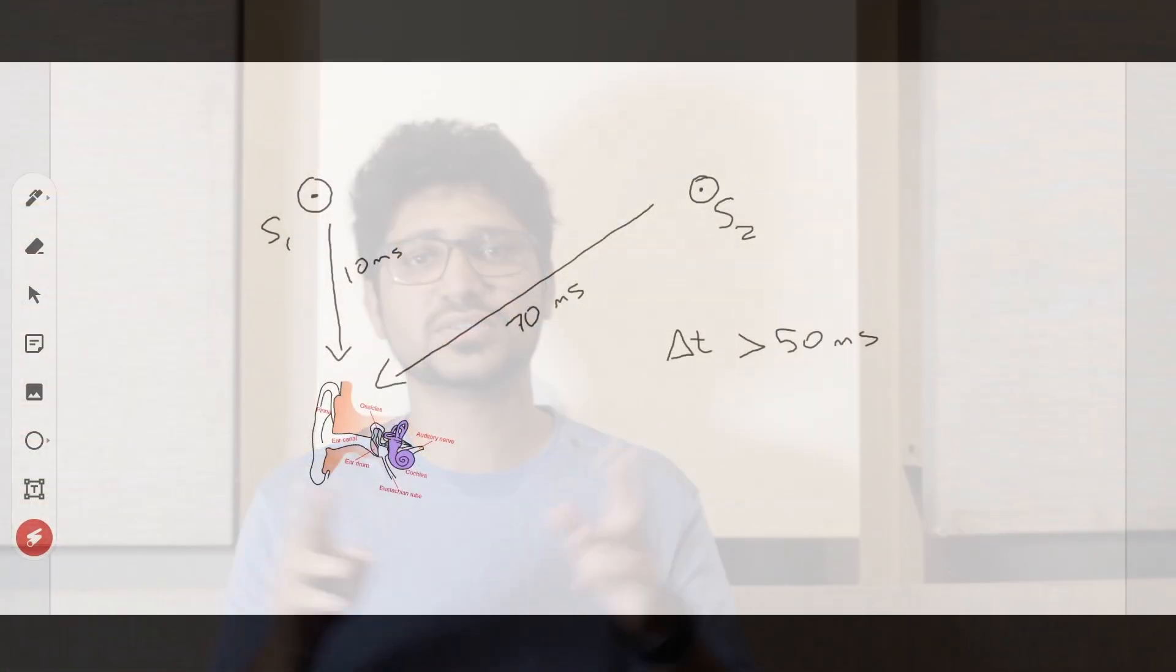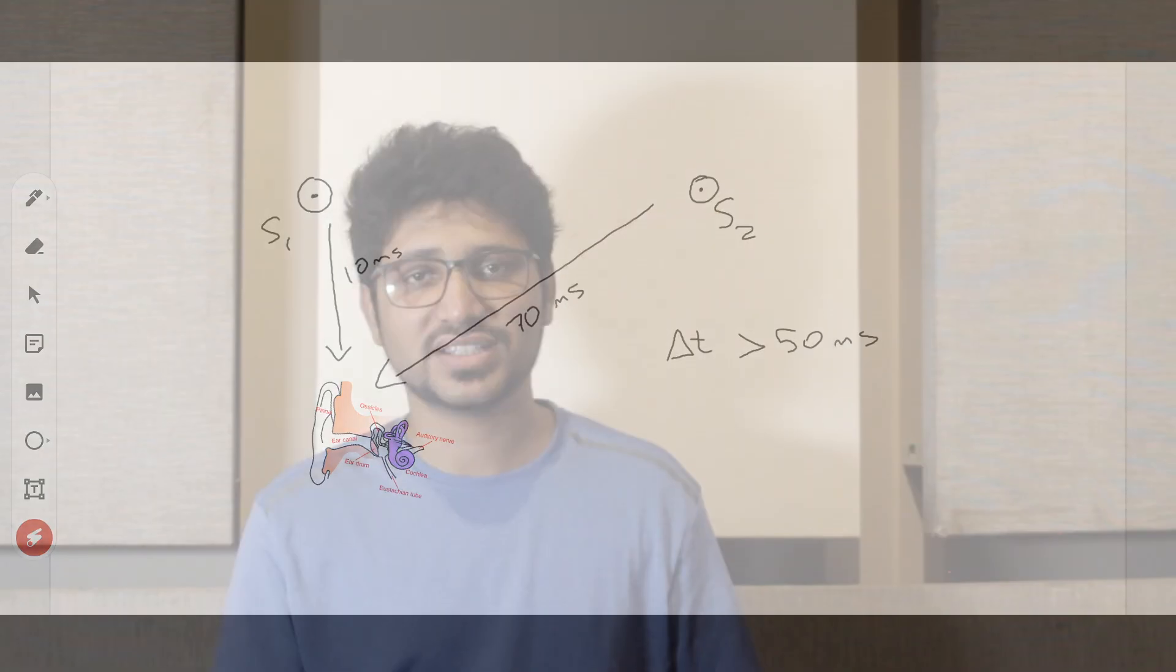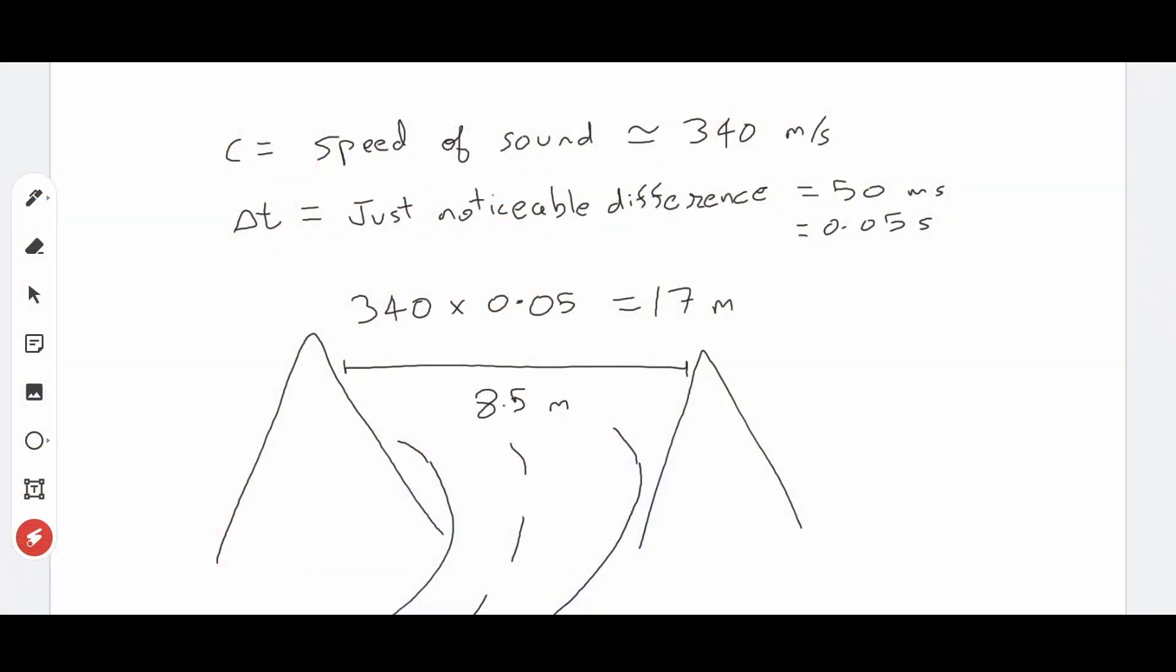Say there are two sound sources which play the same sound with some time delay. Humans can't perceive two sources if the time delay is below 50 milliseconds. This is called the just noticeable difference or the JND. For echoes to be heard, we have known since school that distance of more than 17 meters is required. This is because the speed of sound is 340 meters per second and JND is 50 milliseconds for humans. So 340 into 0.05 is equal to 17 meters. That's the distance required so that you can hear the reflected sound again.